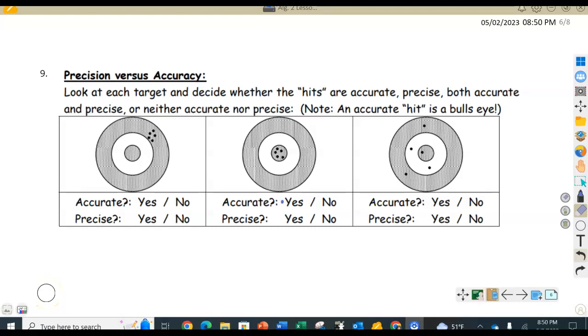All right guys, to finish up this lesson, we're going to look at precision versus accuracy. So it says look at each target and decide whether the hits are accurate, precise, both accurate and precise, or neither accurate nor precise.